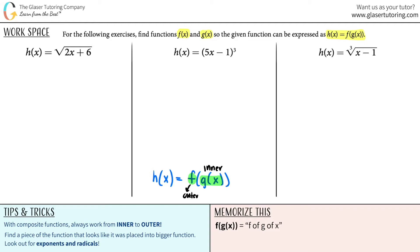For the first one, h of x equals the square root of 2x plus 6. Is anything trapped inside something — maybe a square root or a parenthesis? Definitely. It looks like the 2x plus 6 is all trapped underneath this square root. This whole thing is inside the square root, and that's the hardest part. As soon as you identify that, that is your inner function. In this case, g of x is the inner function, so g of x equals 2x plus 6.